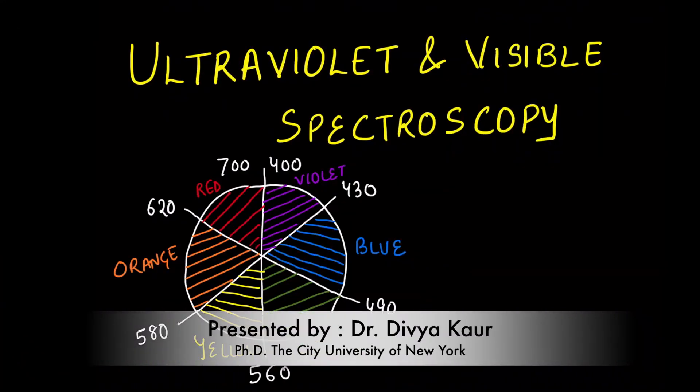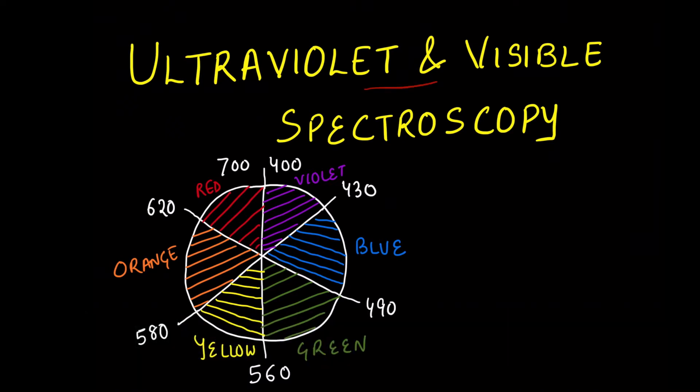Hi everyone, welcome to my channel. In this lesson, we will learn about ultraviolet and visible spectroscopy. This spectroscopy is observed as a result of electronic transitions between molecules, and the wavelength corresponding to the visible region usually lies between 400 to 700 nanometers.